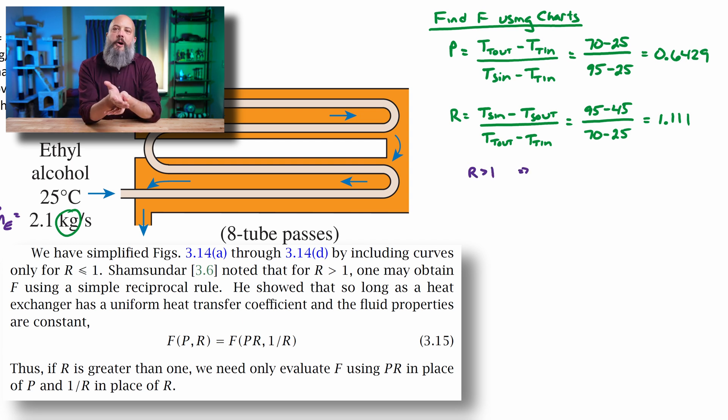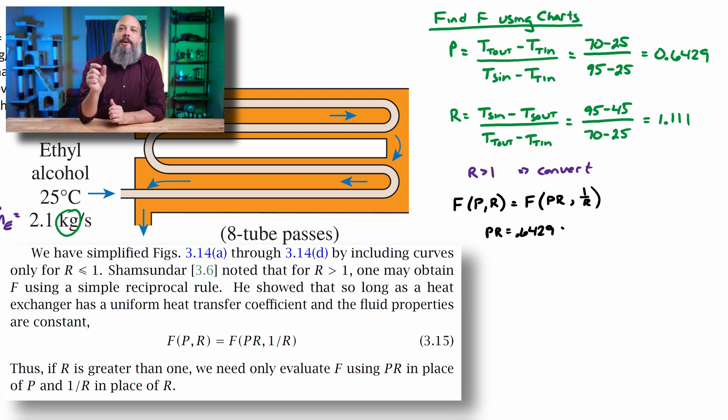So my one over R value, one divided by 1.111 is going to be 0.90. And then P times R is going to give me 0.714.